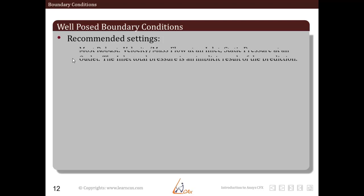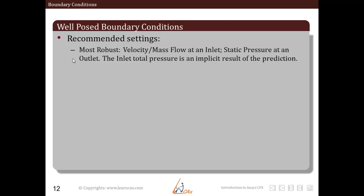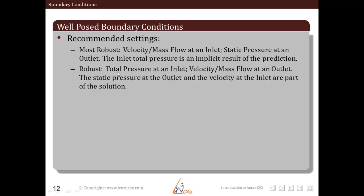The most robust type of boundary condition settings are velocity and mass flow at inlet and static pressure at outlet. Also, inlet total pressure is an implicit result of the prediction. So what we specify here is velocity mass inlet and static pressure outlet. The solver itself will give you the inlet total pressure.